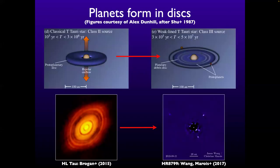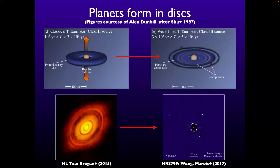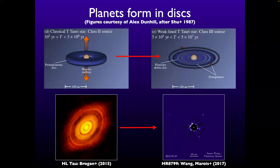I'm going to talk about disks, because if we want to understand planet formation, we have to think about disks. All young stars, like the Sun, form with disks — they're a natural by-product of star formation. Angular momentum is conserved, things collapse, they spin up, and you're left with a disk. Most of the mass that's funneled onto the star comes through the disk at some point.